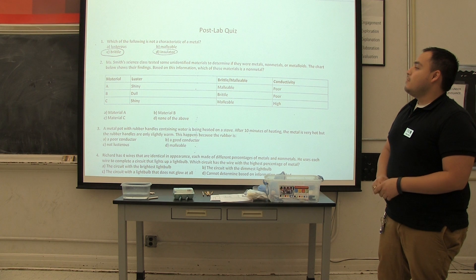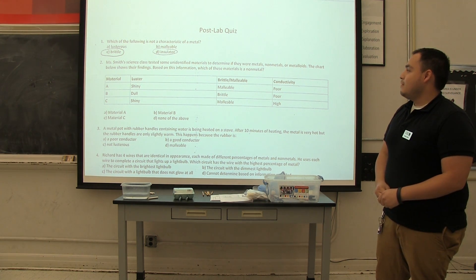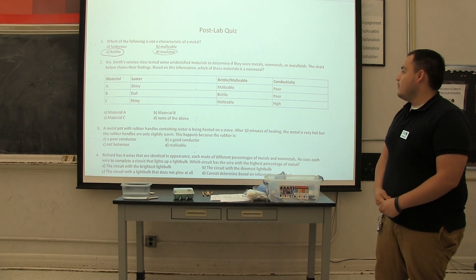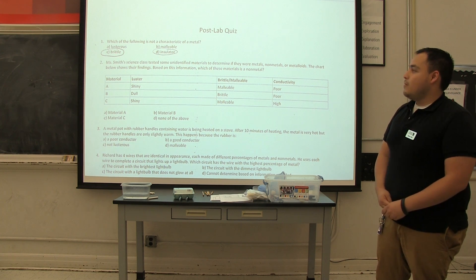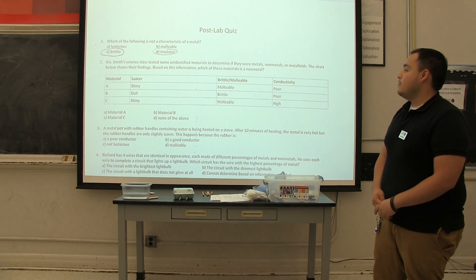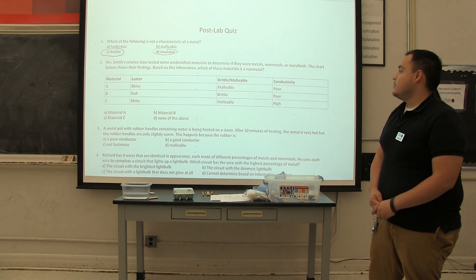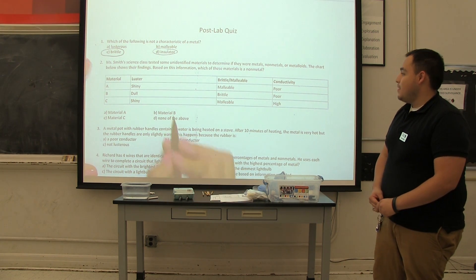For number two, Mrs. Smith's science class tested some unidentified materials to determine if they were metals, non-metals, or metalloids. The chart below shows their findings. Based on this information, which of these materials is a non-metal? V. V, that's correct.